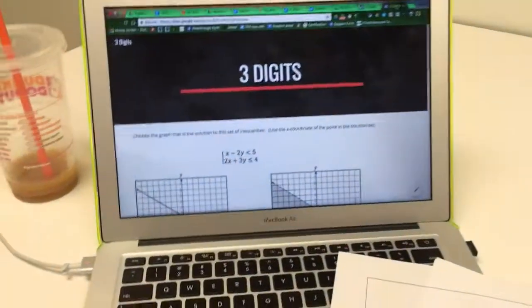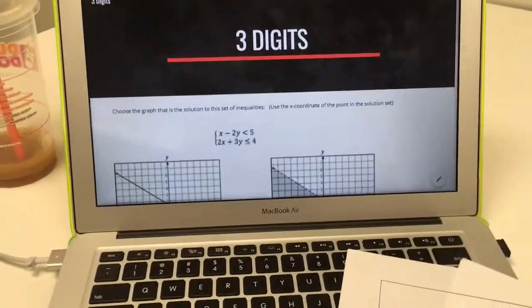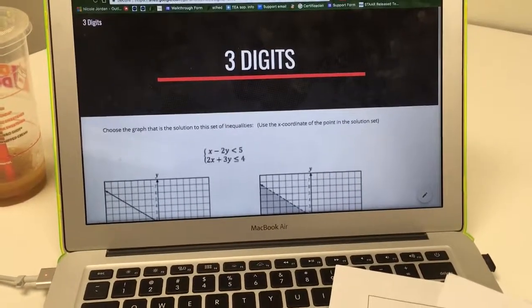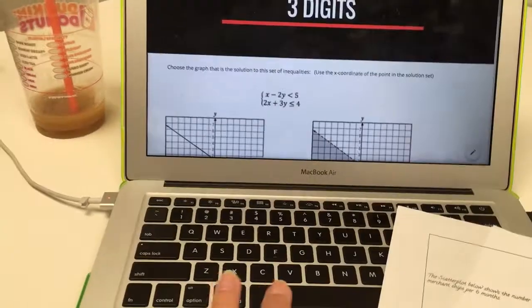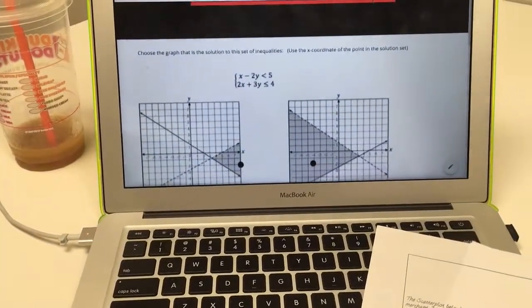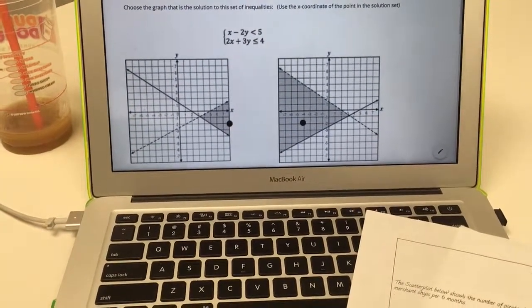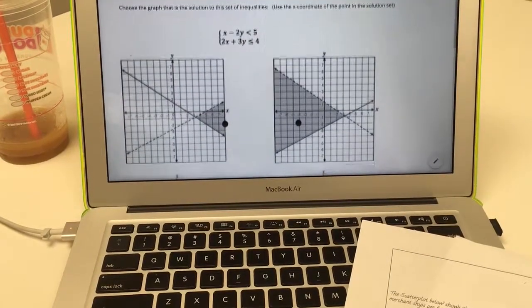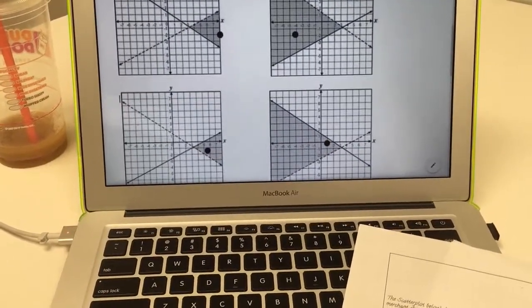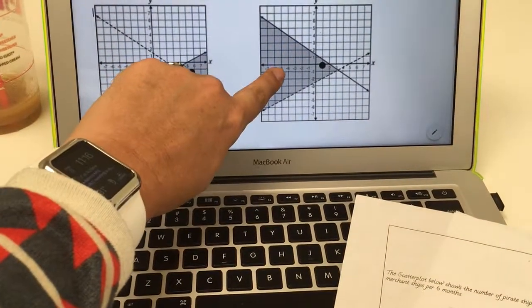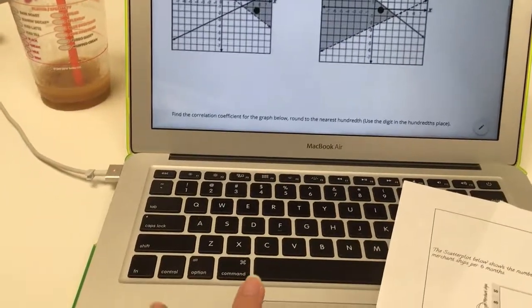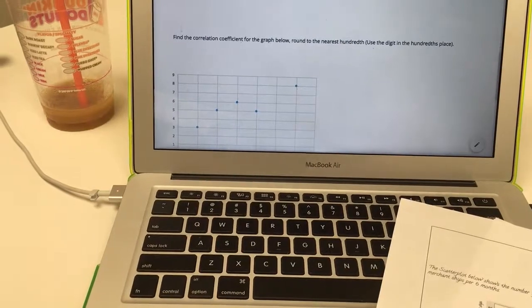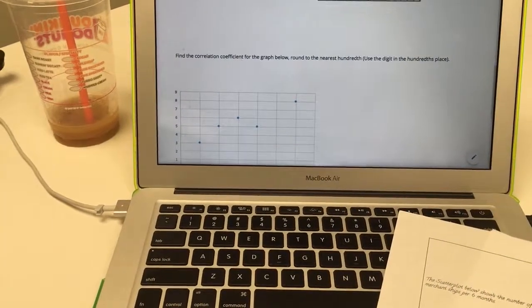The QR code is going to take them to this Google site which will give them the code for the three-digit lock once they solve the problems. The first question asks them to graph a set of inequalities and then use the X coordinate of that solution set. The correct graph is this bottom right one and the X value is 1 so the 1 is the first digit of the three-digit code.